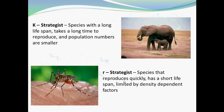Organisms can be identified as either K-strategists or R-strategists. K-strategists are species with a long lifespan, take a long time to reproduce, and have smaller population numbers. R-strategists reproduce quickly, have a short lifespan, and are limited by density-dependent factors. An example of a K-strategist is the elephant — they can live 30 to 50 years and only produce one calf about every other year. An R-strategist example is the mosquito — a female can lay 100 to 300 eggs at a time and lives 3 to 100 days, laying up to 3,000 eggs in her lifetime.